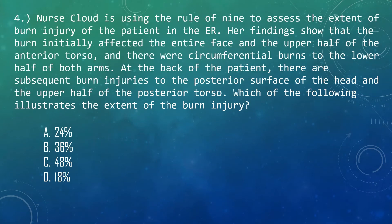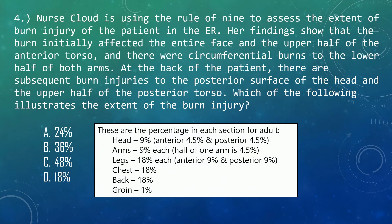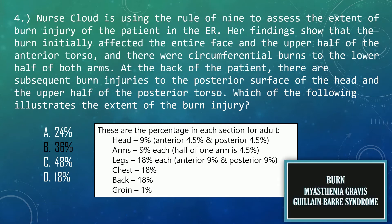Question 4: Nurse Cloud is using the Rule of Nines to assess the extent of burn injury of a patient in the ER. Her findings show that the burn initially affected the entire face and the upper half of the anterior torso, and there were circumferential burns to the lower half of both arms. At the back, there are subsequent burn injuries to the posterior surface of the head and the upper half of the posterior torso. Using the percentages for each section in an adult, the correct answer is 36%. For more discussion about burns, including myasthenia gravis and Guillain-Barré syndrome, check the link in the description.